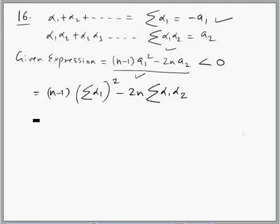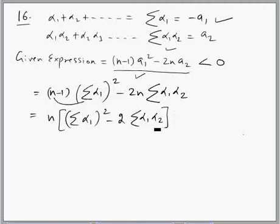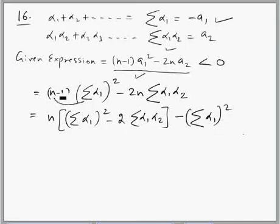After that, I combine the terms. I take n common from the first term, σ(α₁²), and then combine with minus 2 times σ(α₁α₂). And then minus σα₁ whole squared. I have broken this into two parts: combining these terms together, keeping the minus 1 part separate.